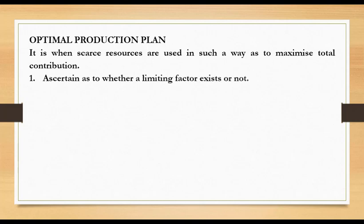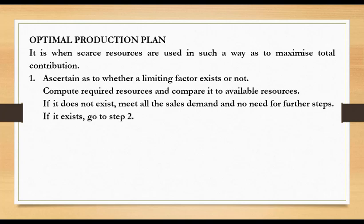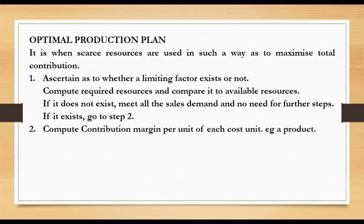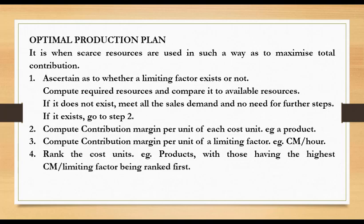What are the steps? First, determine whether a limiting factor exists or not. Compute the required resources and compare to available resources — if we require more than what is available, a limiting factor exists. If it does not exist, meet all the sales demand and no further steps are needed. If it exists, go to step two: compute contribution margin per unit of each product. Step three: compute contribution margin per unit of limiting factor, let's say contribution margin per hour. Then rank the products, with those having the highest contribution margin per limiting factor ranked first. Then prepare an optimal production plan.